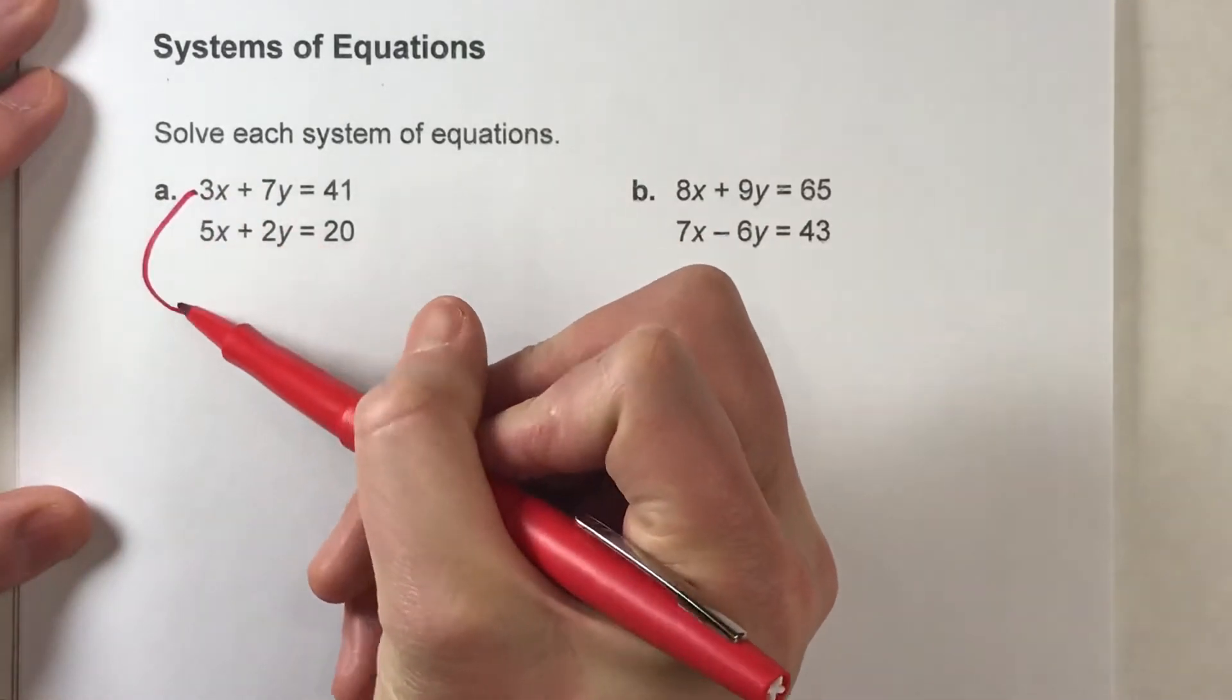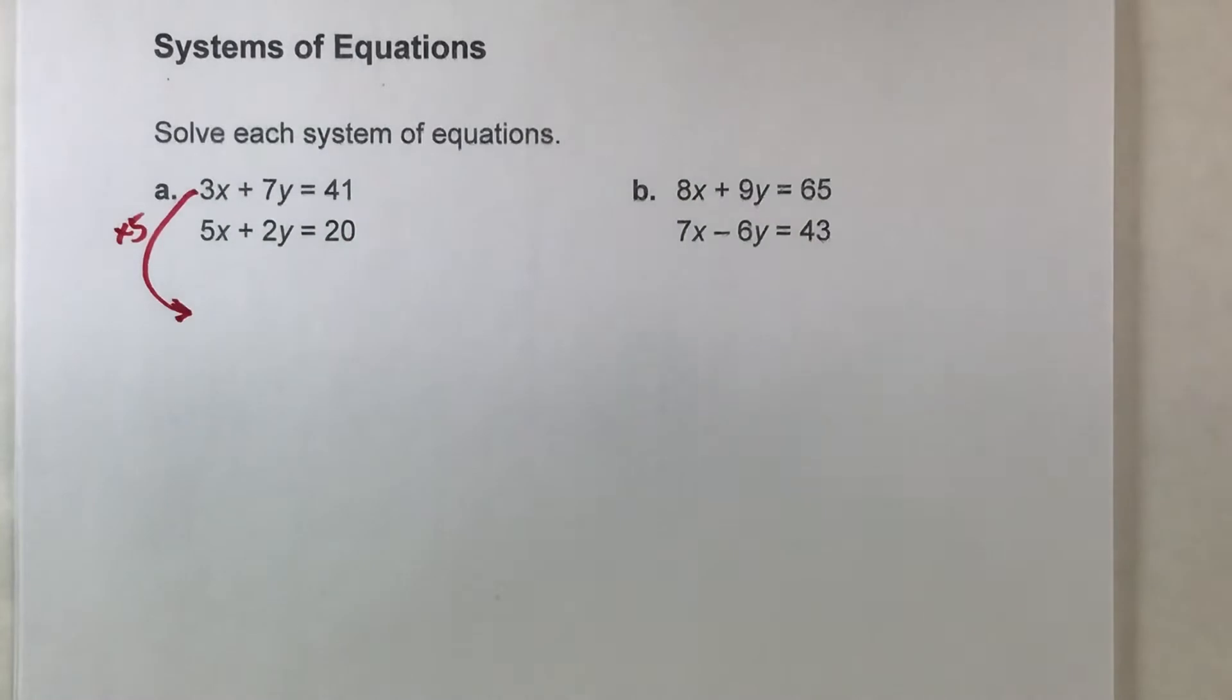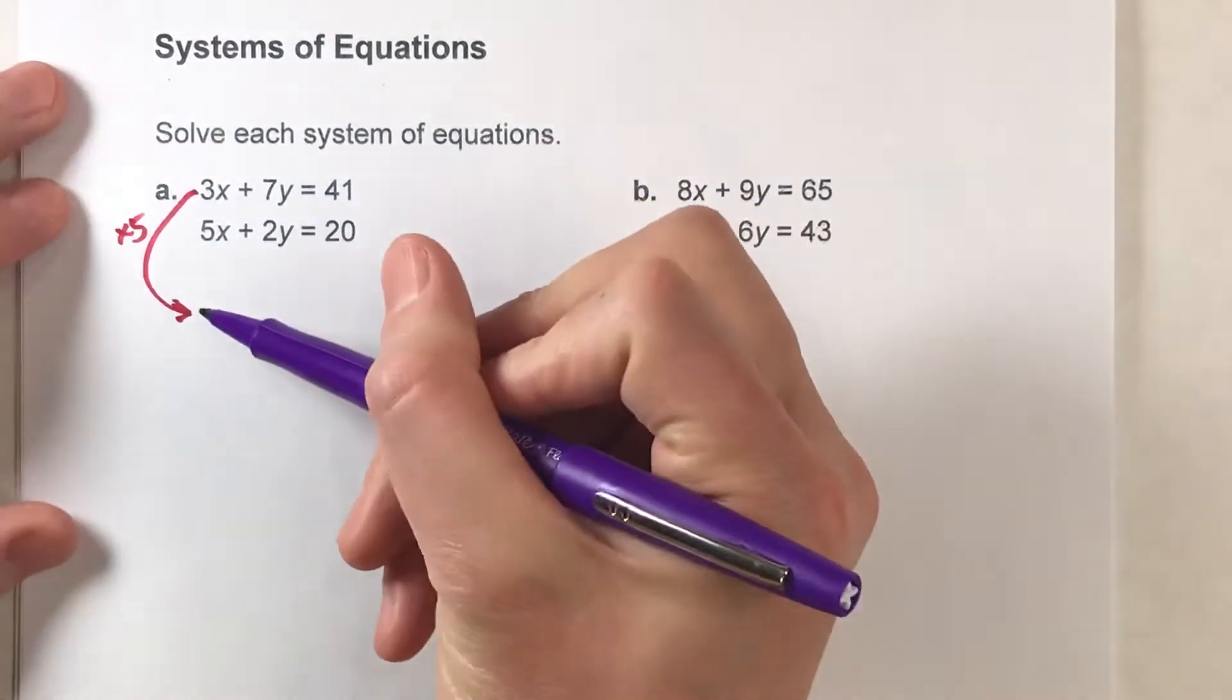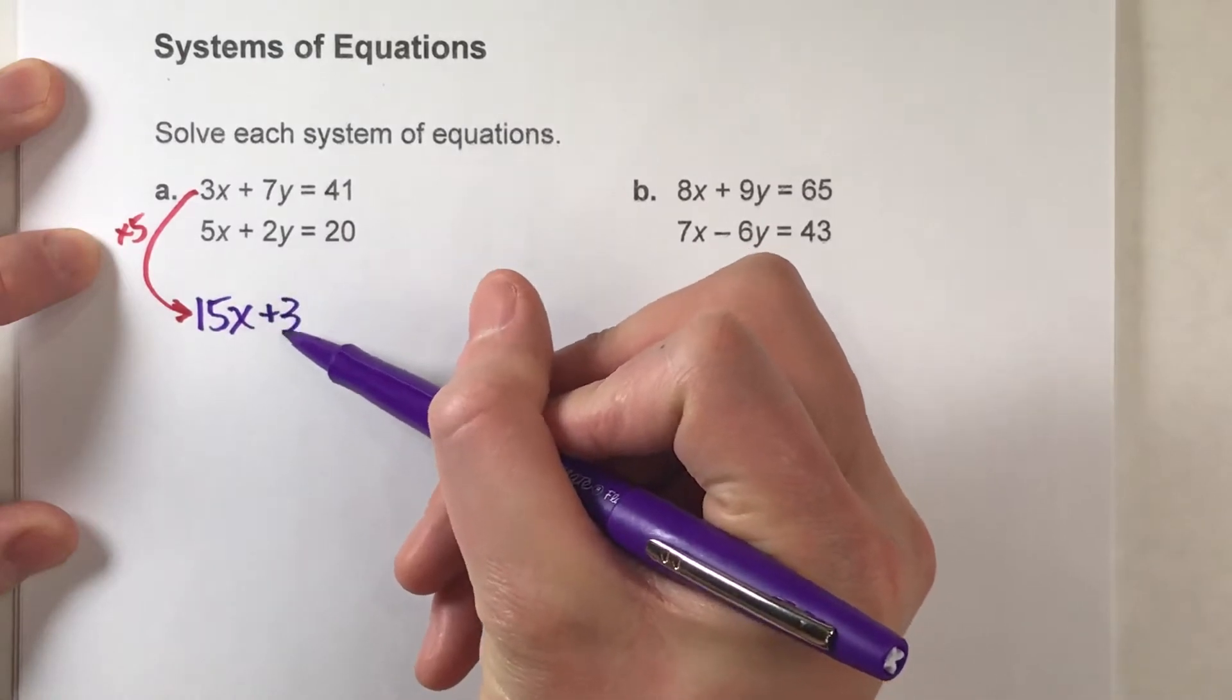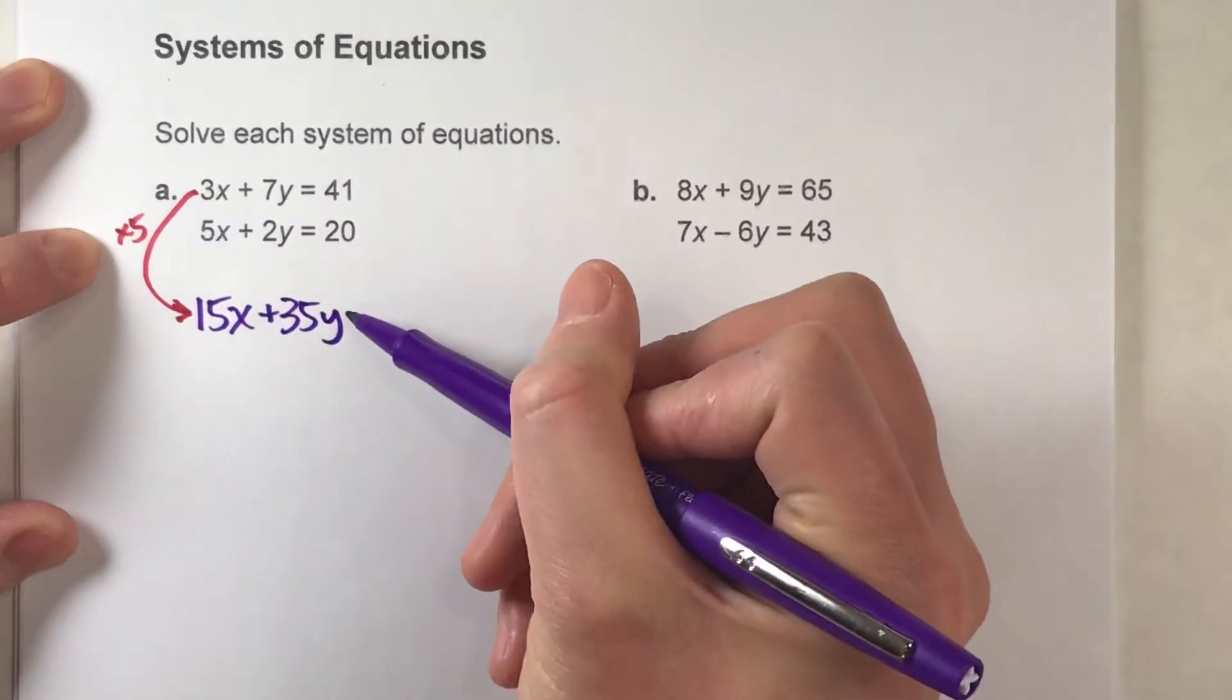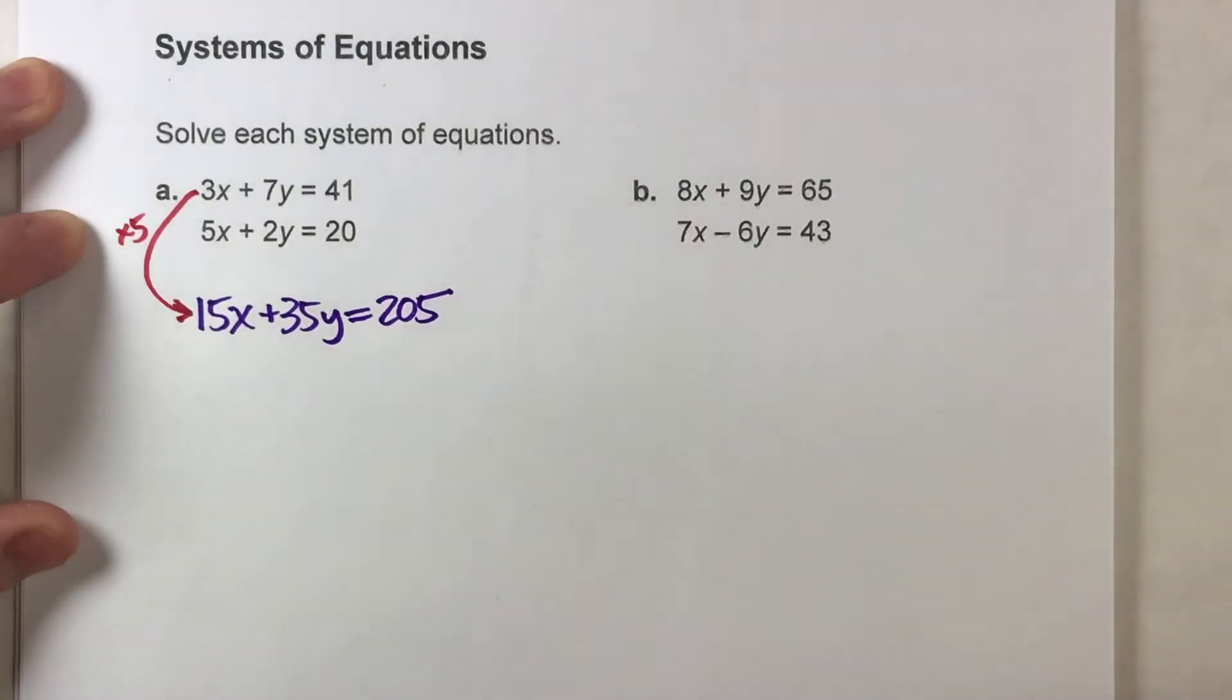I'm going to multiply this first equation by 5. If I do that, 5 times 3x gets me 15x, 5 times 7y is 35y, and 5 times 41 is 205.